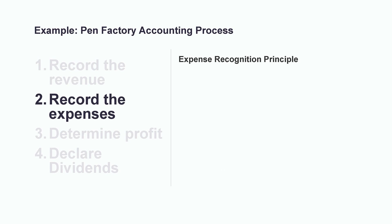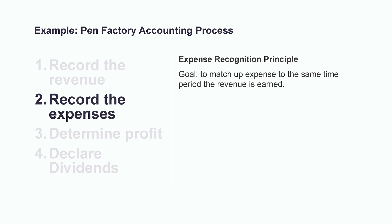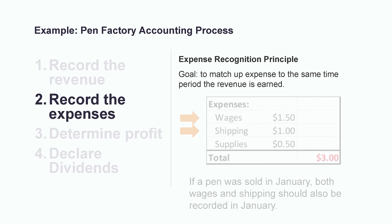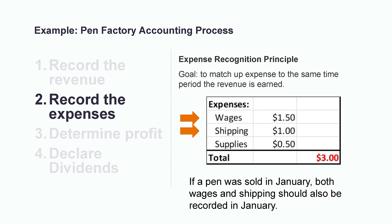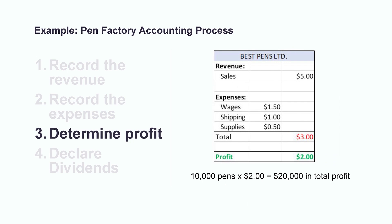So we have our revenue, and now it's time to talk about the expense piece of the puzzle. Similar to the revenue side, the costs that a company incurs are recognized in the income statement when the transaction occurs and not based on the timing of when cash changes hands. The goal of this expense recognition principle is to match up the expense in the same period that the revenue is earned. For every pen sold, we owe our sales employees $1.50. That means if I sold a pen in January, I need to make sure that $1.50 wage expense is recognized and recorded in the January financial statements, even if I haven't had the chance to physically pay the employee until the following month. Same goes for that $1 shipping cost. Ultimately, we're matching up the expense with the revenue to ensure they are both reflected in the same period, which allows us to accurately calculate our profit. For every pen sold, we have $2 of profit.